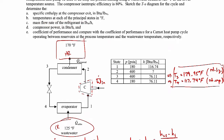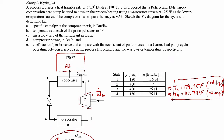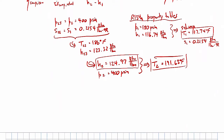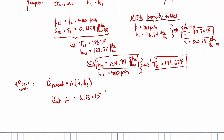Part C is finding the mass flow rate of the refrigerant in pounds mass per hour. We do a first law analysis on the condenser, drawing a control volume around it. We know the required heat transfer rate is 3 million BTUs per hour, and we know the specific enthalpies at the inlet and outlet. First law on the condenser gives: Q dot removed equals M dot times (H2 minus H3). Solving for mass flow rate gives 6.13 times 10 to the fourth pounds mass per hour.